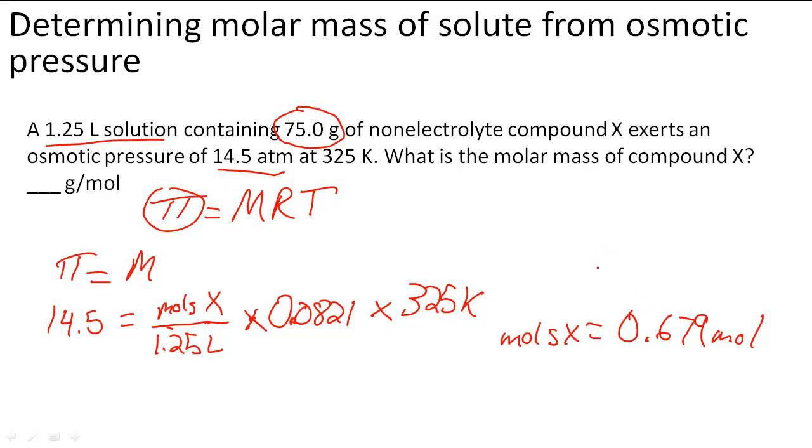We know the grams are 75.0 grams, so all we have to do is divide it by the moles of X. This is the grams of X divided by 0.679 moles of X, and we get the molar mass, which is 110 grams per mole for X.